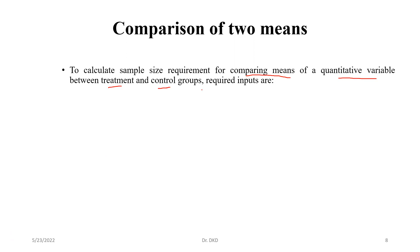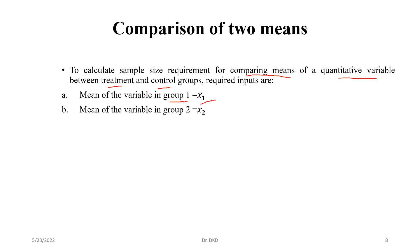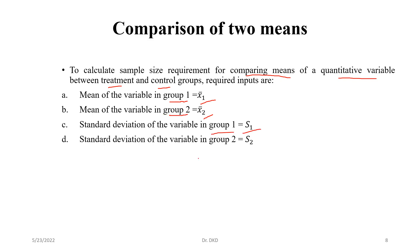What are the required inputs for calculating the sample size? First of all, mean of the variable in group 1 — suppose group 1 is the treatment group, x1 bar — and mean of the variable in group 2 — suppose group 2 is the control group, x2 bar. Standard deviation of the variable in group 1 is s1, and standard deviation of the variable in group 2 is s2.